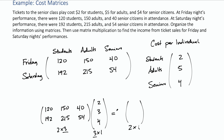This two-by-one result matrix will represent our Friday and Saturday results, and the entries will be the income for those two nights.